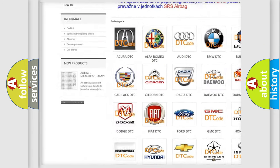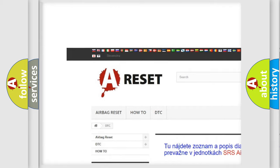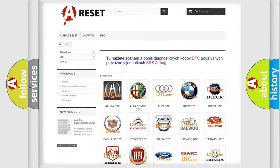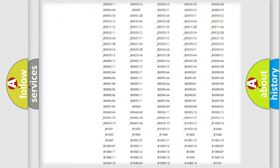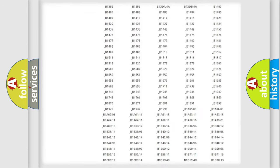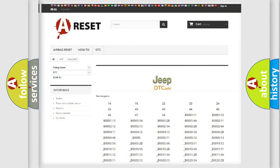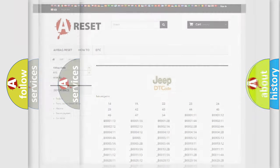Our website airbagreset.sk produces useful videos for you. You do not have to go through the OBD2 protocol anymore to know how to troubleshoot any car breakdown. You will find all the diagnostic codes that can be diagnosed in Jeep vehicles, and many other useful things.